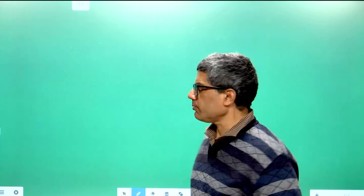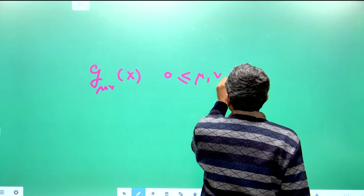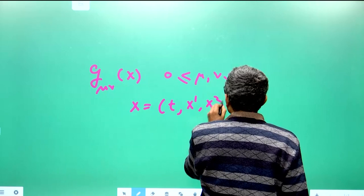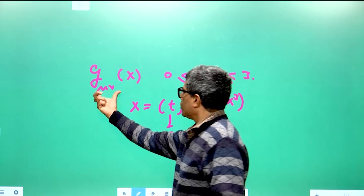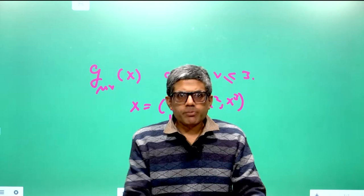In the general theory of relativity, you assume that there is a metric of spacetime g_μν of x. This is a 16-component symmetric matrix, and x stands for an event, namely the time and the spatial points. Einstein said that g_μν, the metric tensor of spacetime, should be regarded as a replacement of the Newtonian potential for the gravitational field.